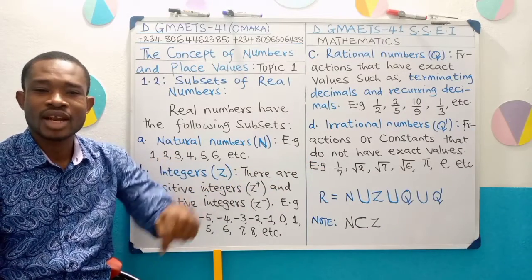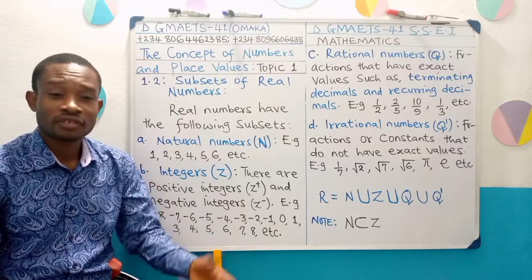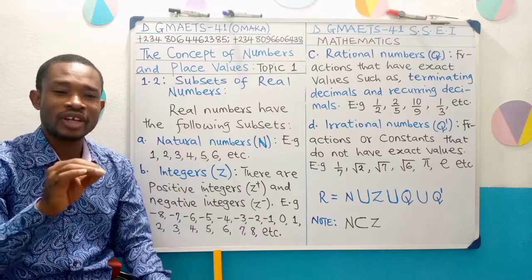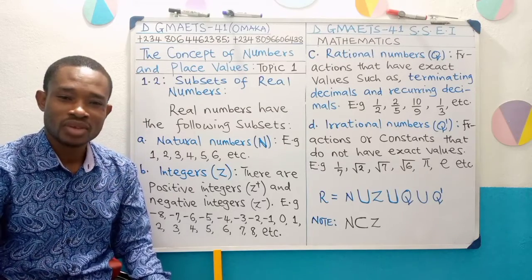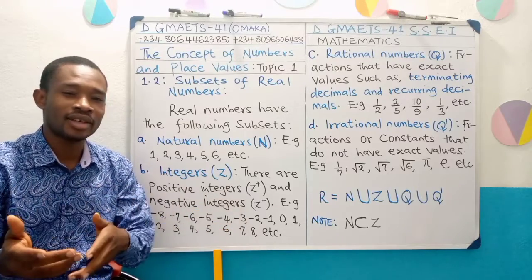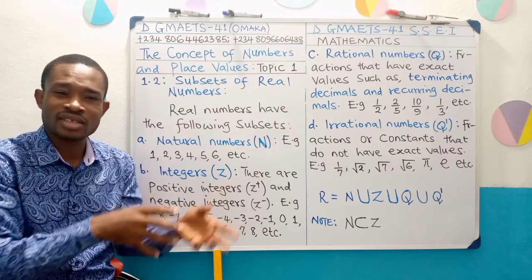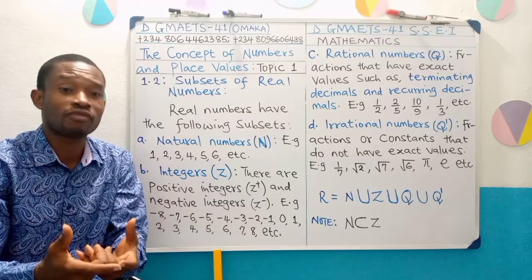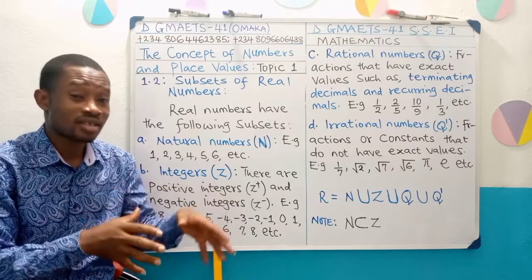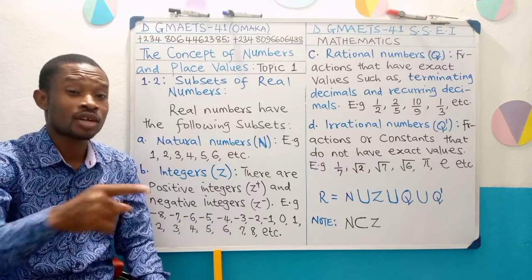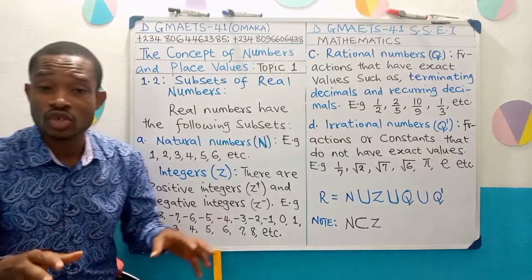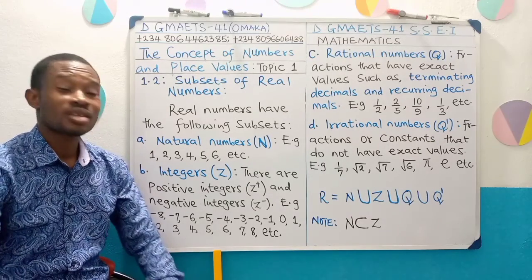Surds are also irrational numbers. We are going to study surds in the course of this program. Surd numbers are simply the square root of non-perfect square numbers. We have numbers we call perfect squares — like 4, 9, 16, 25. If you take the square root of such numbers, they give you whole numbers, so we don't refer to them as surds. But square root of 2, square root of 7, square root of 6 — these fall under irrational numbers and we refer to them as surd numbers.